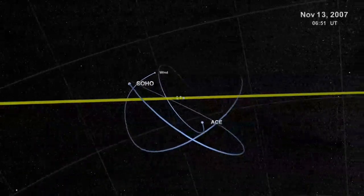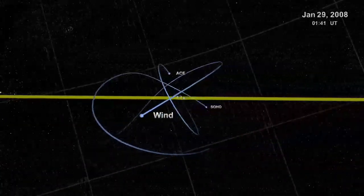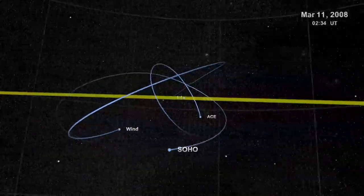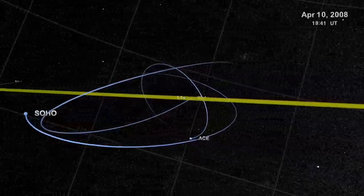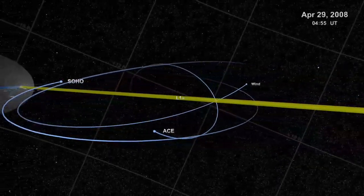Welcome to a Lagrange point. This one, L1 in space speak, denotes a relative position between the Earth and the sun, where the gravitational pull of each object is in approximate balance.